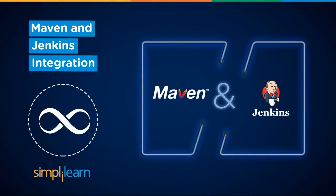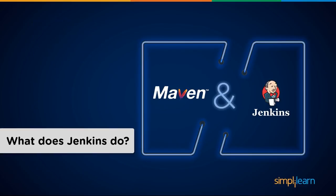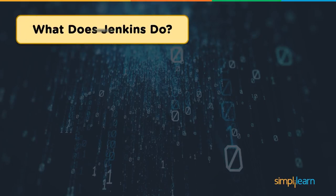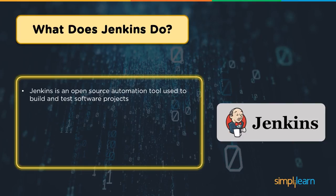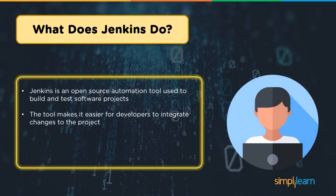Welcome everyone to this demo on Maven and Jenkins integration. We are going to talk about how exactly we can integrate both Maven and Jenkins to implement CI processes. Jenkins is a CI tool used for performing build automation and test case automation. It's one of the most popular open source CI tools available, and it makes it easier for developers to integrate changes into a project.